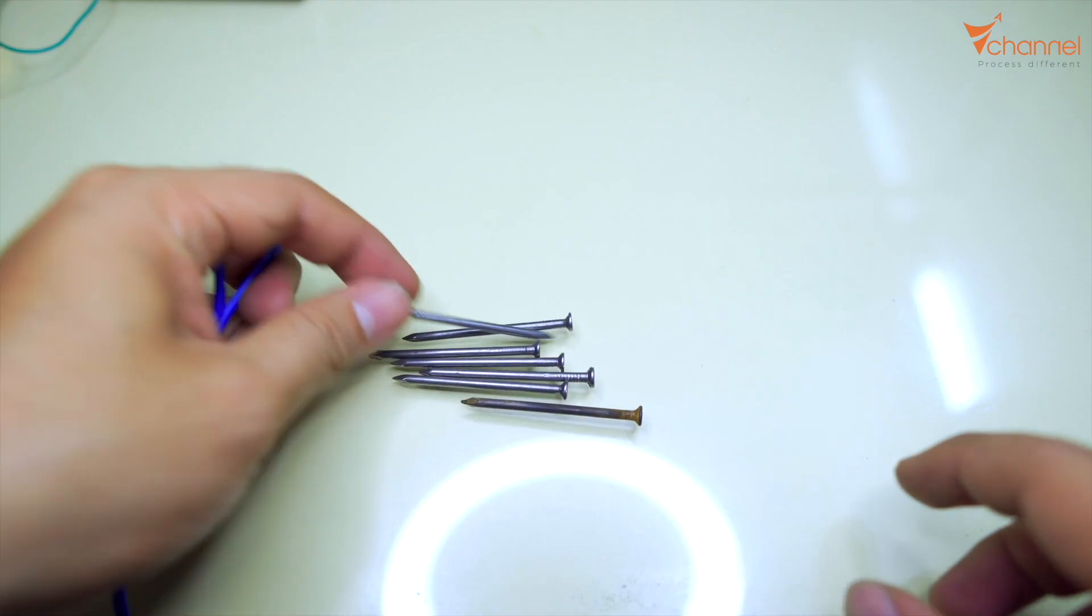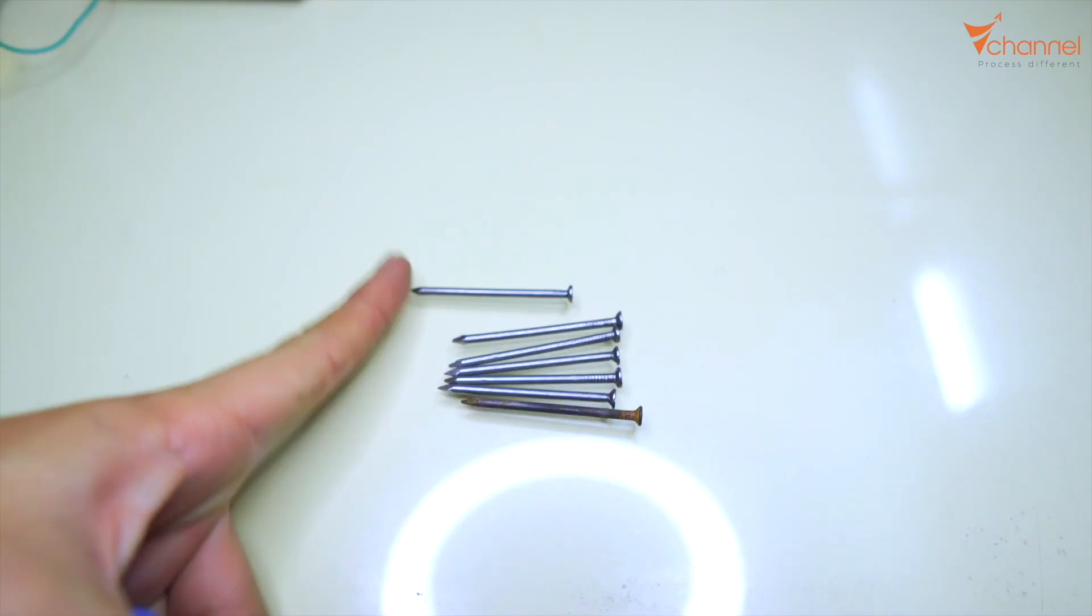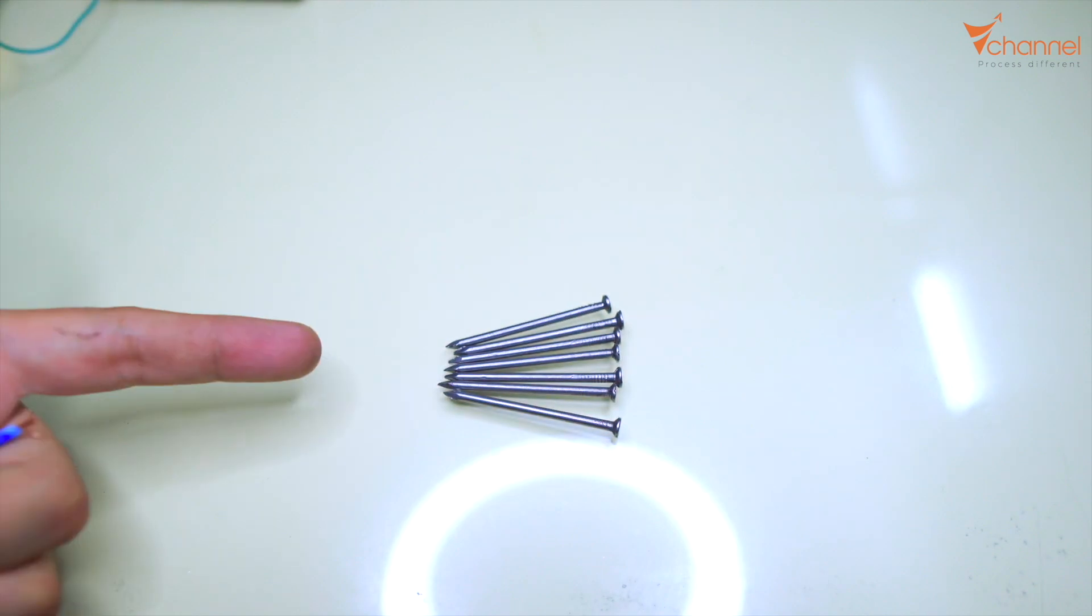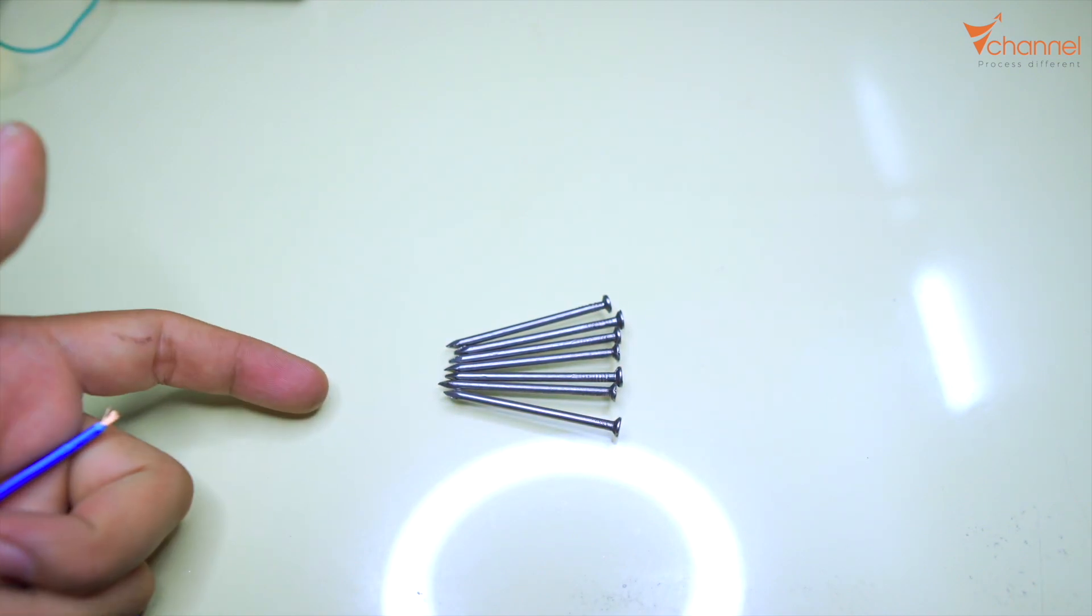We will continue. Right here, we will connect the wire to these seven nails. It will be the ion generator. If we can use copper nails or cold copper, it will be better.